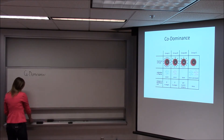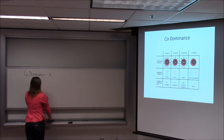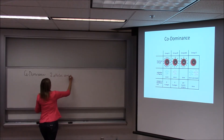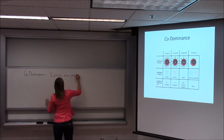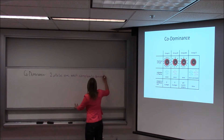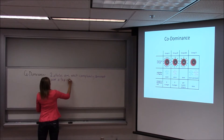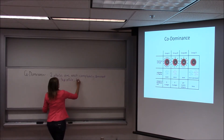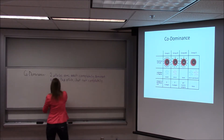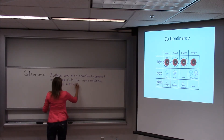Another way of saying that is: two alleles are completely dominant — each completely dominant over a third allele — but not completely dominant over each other. When they occur together, they're both expressed.